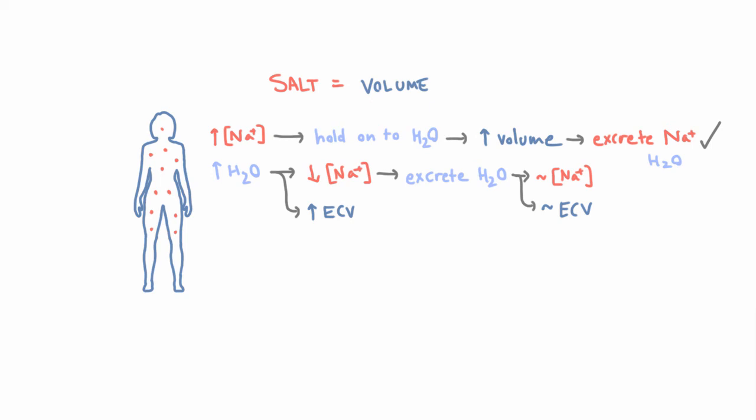And this is why people who have high blood pressure are told not to eat too much salt. They're not told to avoid water. Because if they do drink some water, they'll very quickly get rid of it. But if they eat some salt, it's going to cause them to hang on to water. And it'll be slower to get rid of that salt and water.